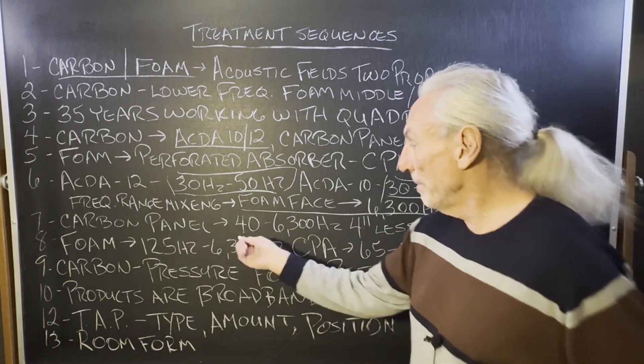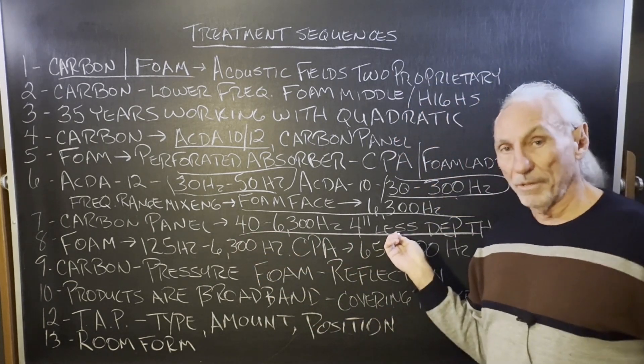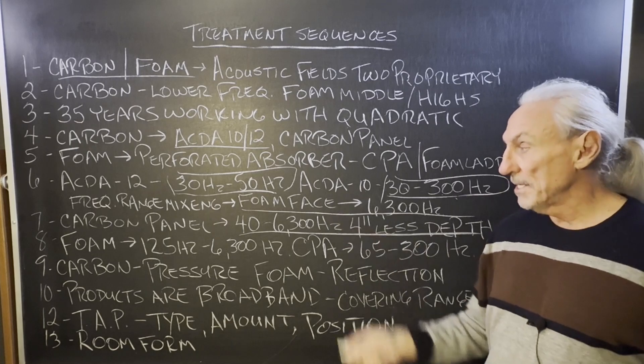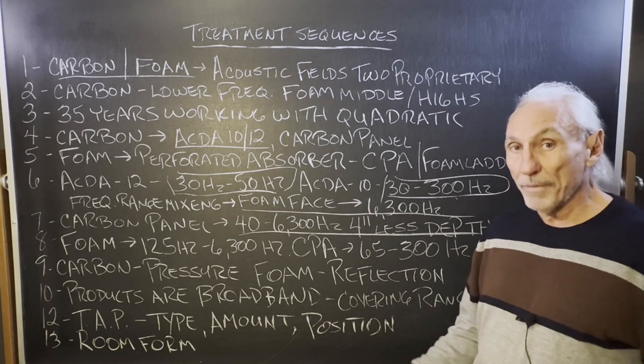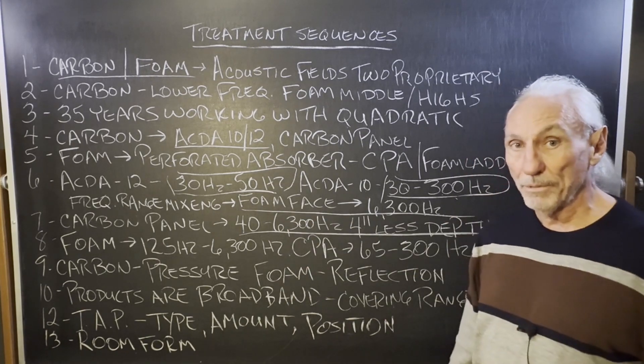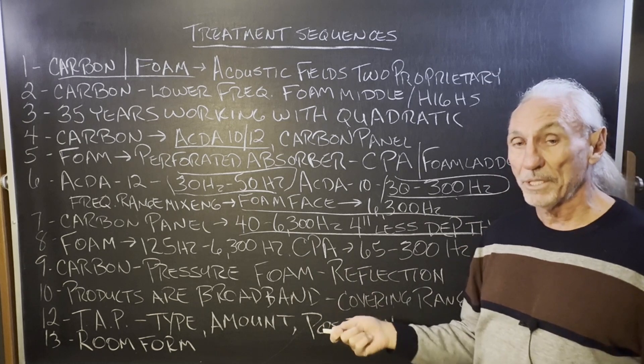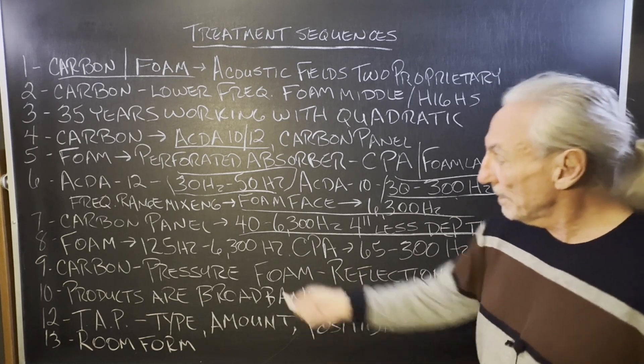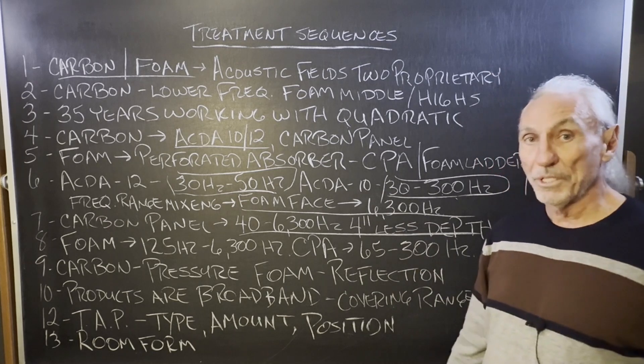Okay. So, the carbon panel is our next offering. It's four inches less thick. The ACDAs, they're big, 16 inches deep. So, if you don't have the room, or you don't have the need to go down to 30 hertz, a lot of people don't. So, you can start at 40, okay? Or if your room doesn't exhibit 30 cycle problems, you don't have to treat them. So, 40 to 6300 is four inches less depth.